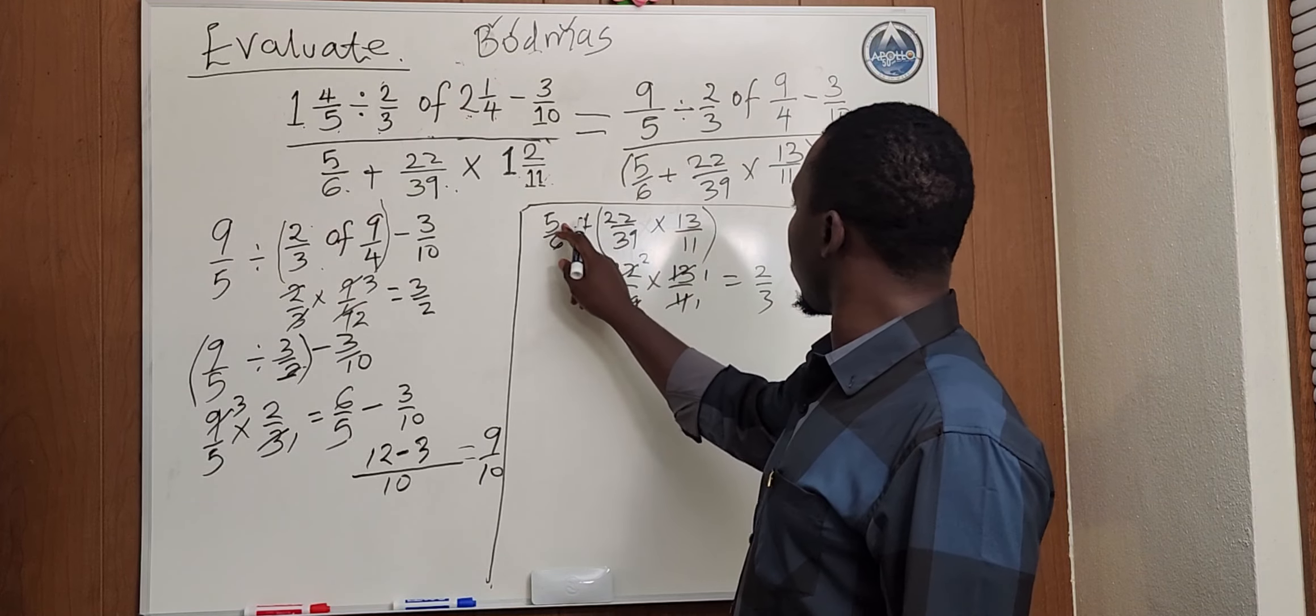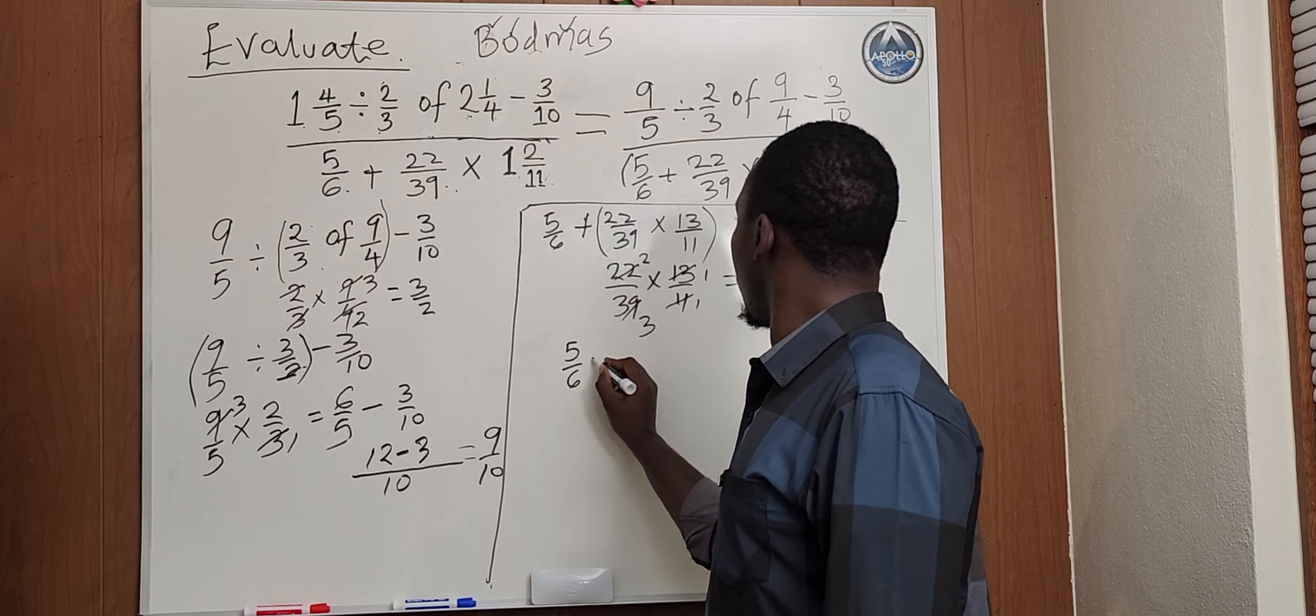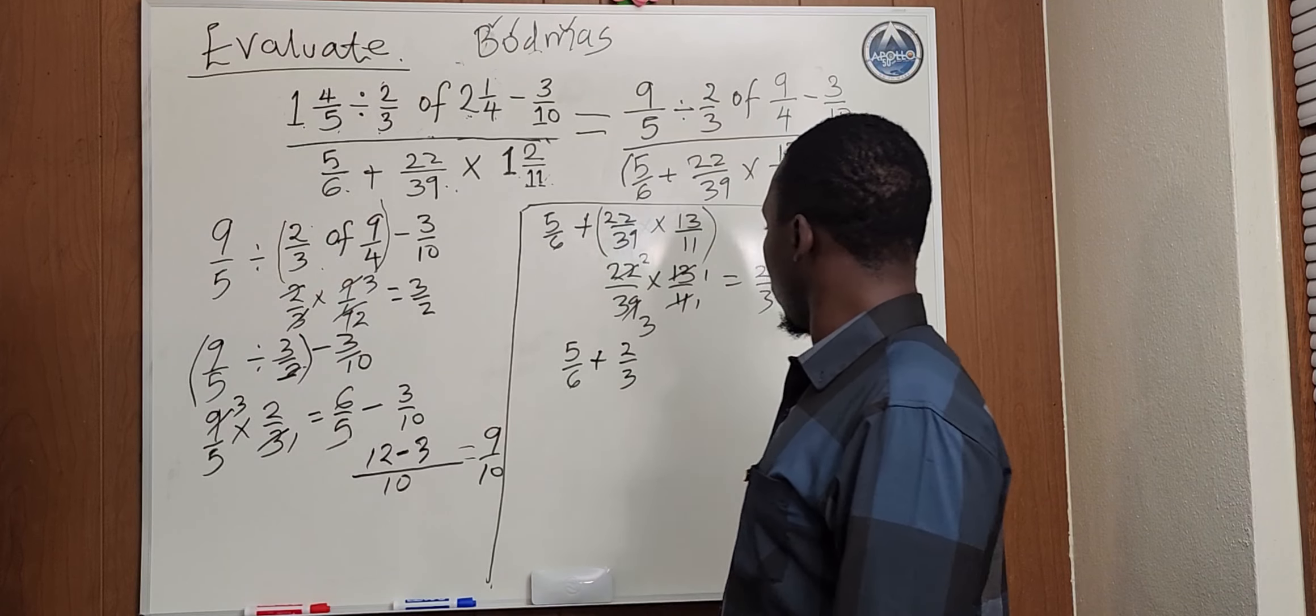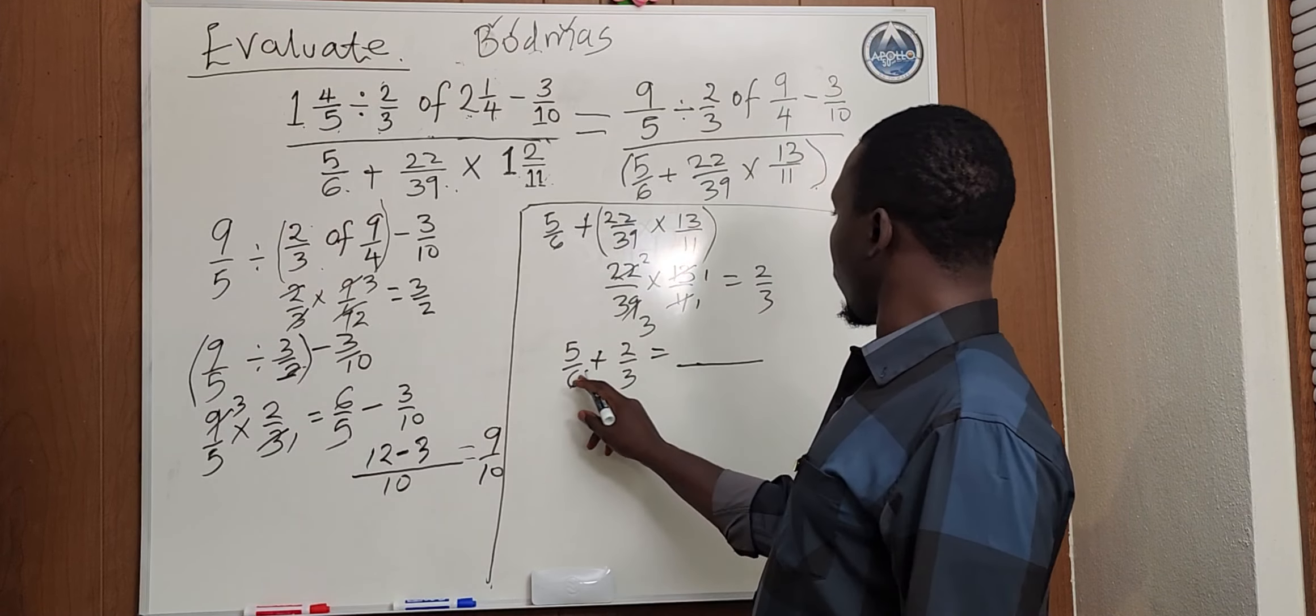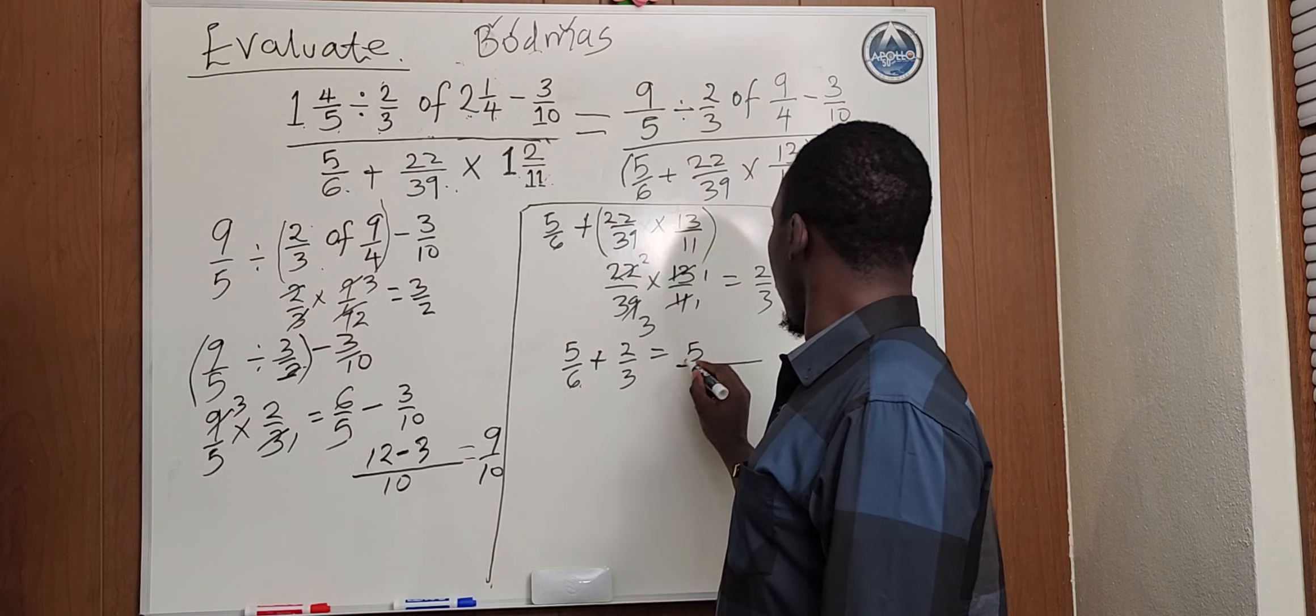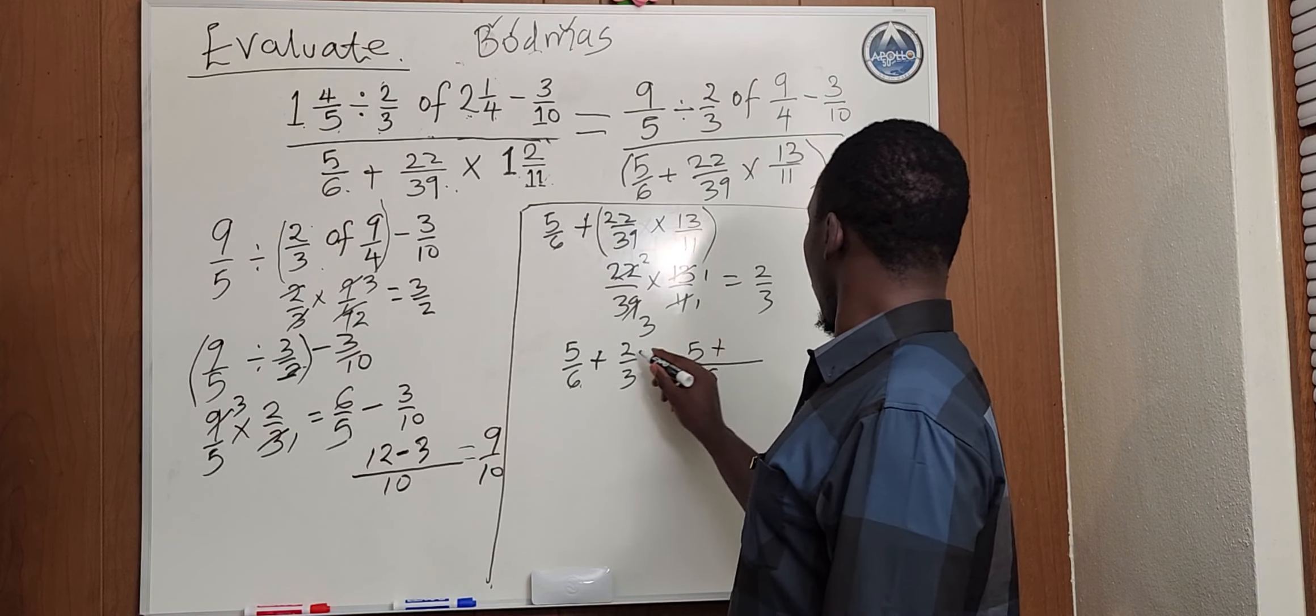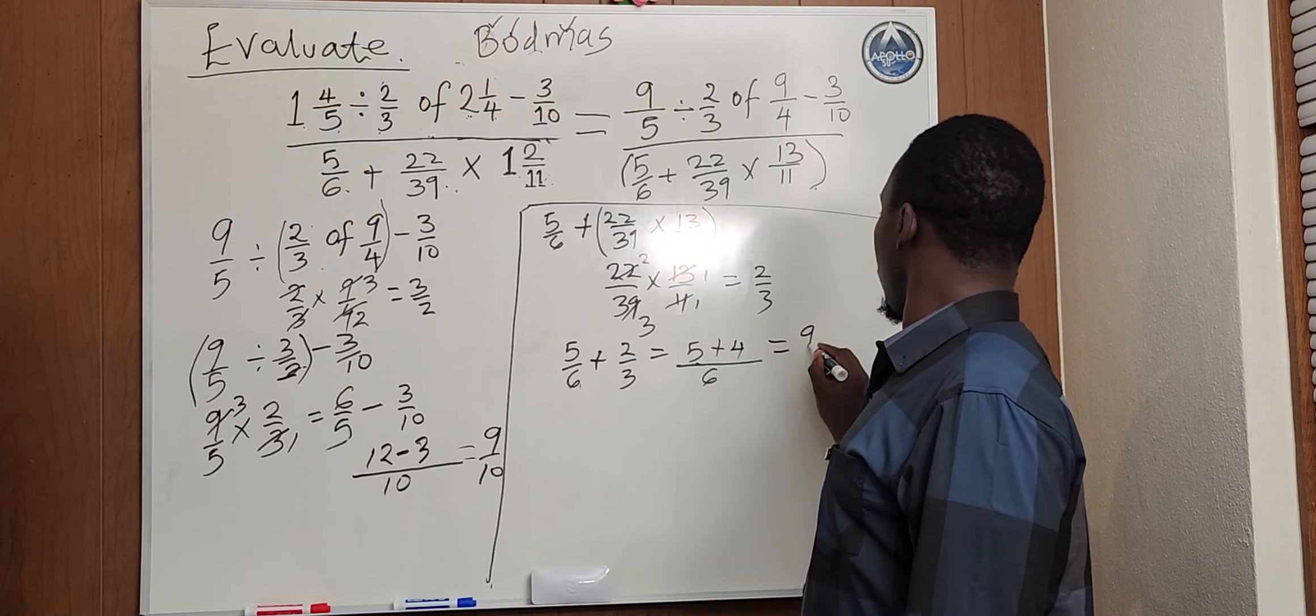Now we write this again. It will be 5 over 6 plus 2 over 3. This will give us the LCM for 6 and 3 is 6. 6 goes here, 1 times 5 will give us 5 plus 3 goes to 6, 2 times, times 2, 4. Then the answer will be 9 over 6.